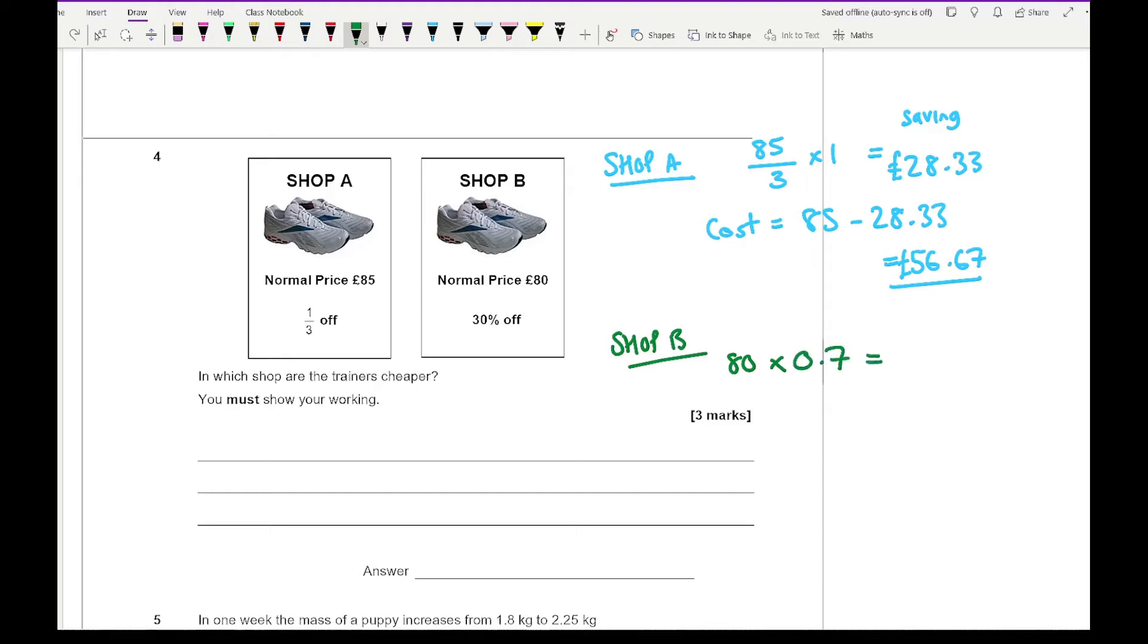I get an answer of £56. If you wanted to check, 10% is going to be £8, so you're getting £24 off, so it's £80 minus £24 which equals £56. So which shop is it cheaper? It's going to be shop B.